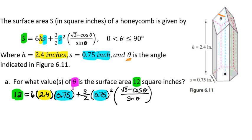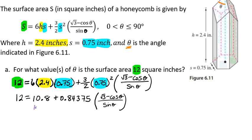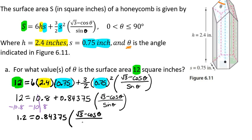Because remember, it's saying for what values of theta — so we don't know what theta is. When we multiply this out, we get 12 equals 10.8 plus 0.84375 — because we plug that into the calculator, that's where that came from — times the square root of 3 minus the cosine of theta divided by the sine of theta. Now we're really going to try and get the thetas by themselves, so we're going to subtract 10.8 from both sides, which gives us 1.2 equals 0.84375 times the square root of 3 minus the cosine of theta over the sine of theta.